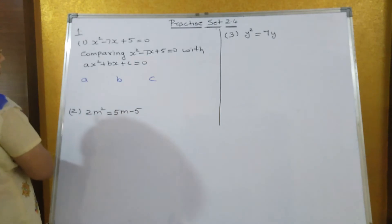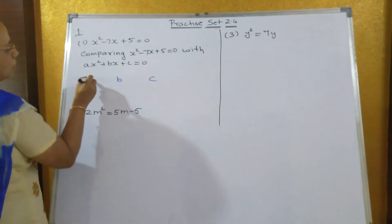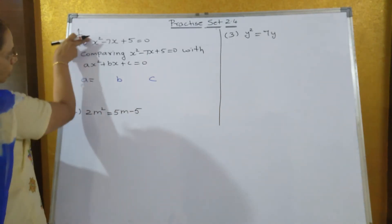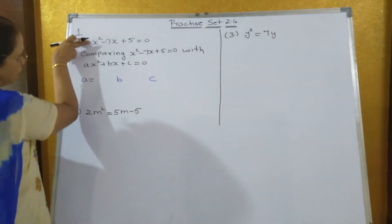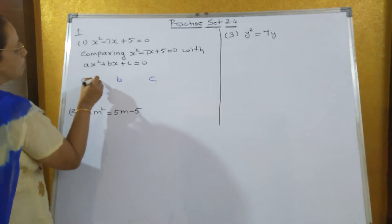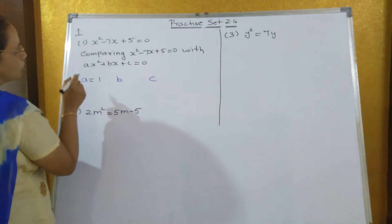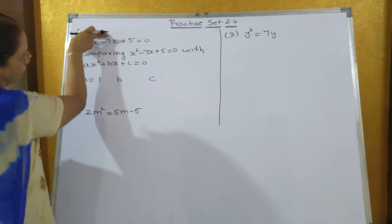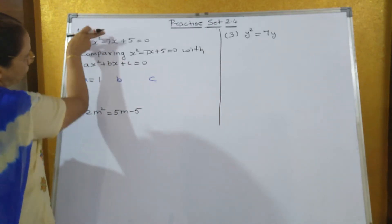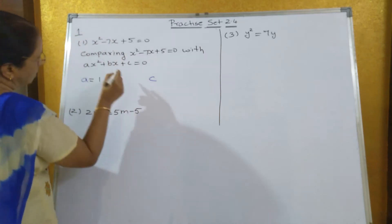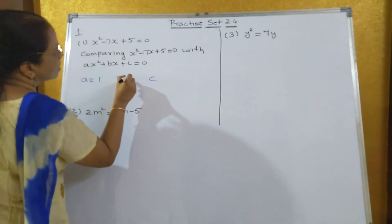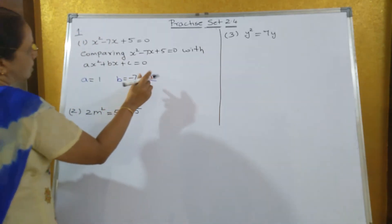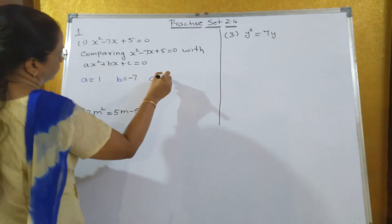A is equal to what? If you compare, in the place of A there is no number, so A is equal to 1. When you compare B, what you get? Minus 7. So B is equal to minus 7, and C is equal to 5.